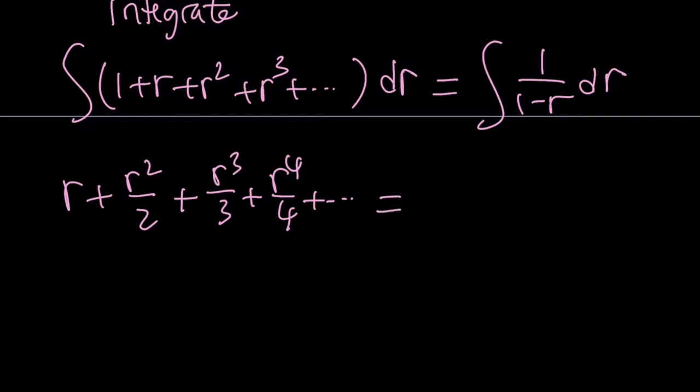On the right-hand side, we have the ln function. If you have 1 over r, that will be ln r. If you have 1 over negative r, that's going to be negative ln negative r. But we have 1 minus r. And notice that r is less than 1, so 1 minus r is positive. I don't need the absolute value. To keep a long story short, the integral of the right-hand side is going to be negative ln 1 minus r.